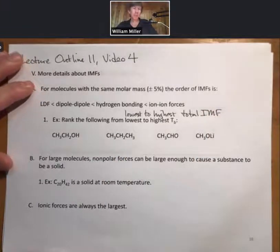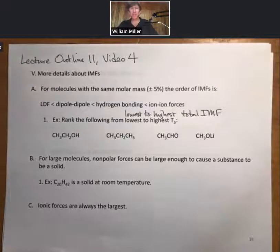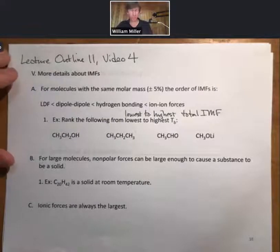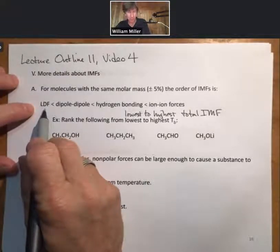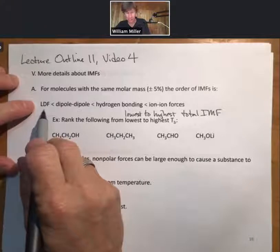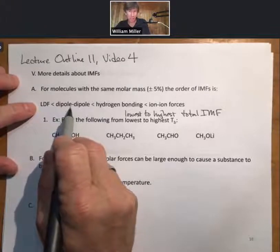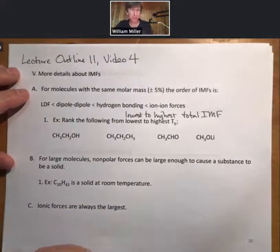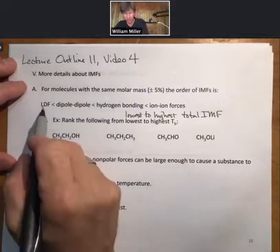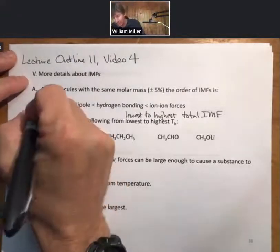To help you determine total IMF, it's always important to remember which one is the dominant or largest intermolecular force. When solving problems, if LDF is the largest one, then it will be less than something that also has dipole-dipole, then hydrogen bonding, then ion-ion forces. It gets a little trickier, because if there are two things that have LDF, then you have to look at molar mass.